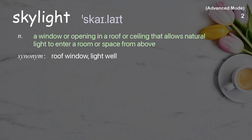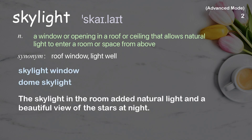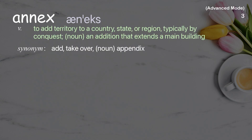Skylight: a window or opening in a roof or ceiling that allows natural light to enter a room or space from above. Examples: skylight window, dome skylight. The skylight in the room added natural light and a beautiful view of the stars at night.